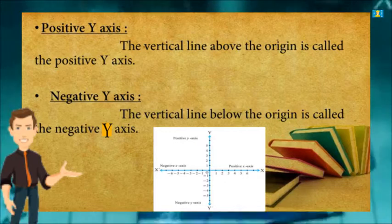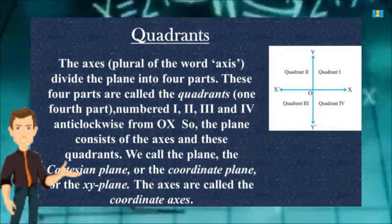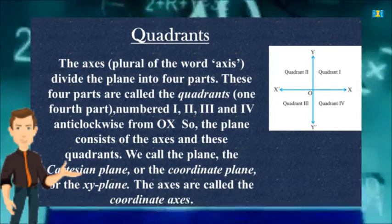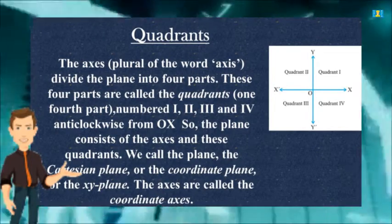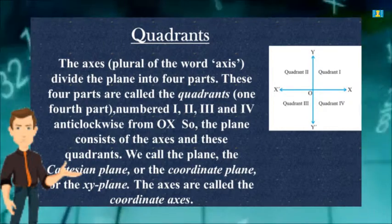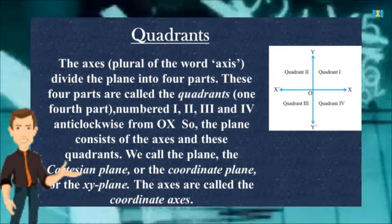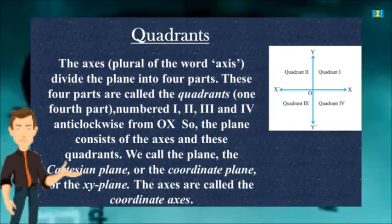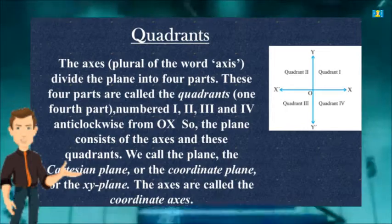The vertical line below the origin is called the negative y-axis, as shown in the figure. The axes divide the plane into four parts called quadrants, numbered one, two, three, and four counterclockwise from OX. We call this plane the Cartesian plane, or the coordinate plane, or the XY plane. The axes are called the coordinate axes.